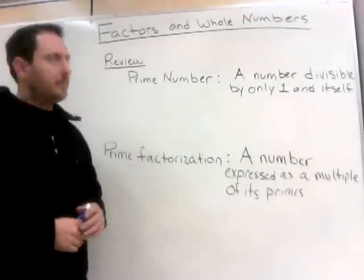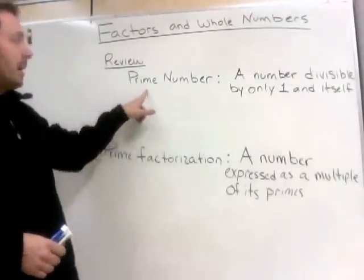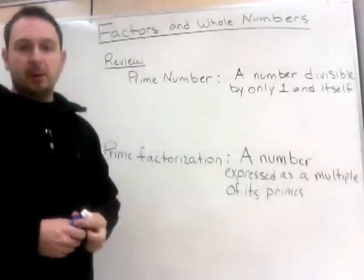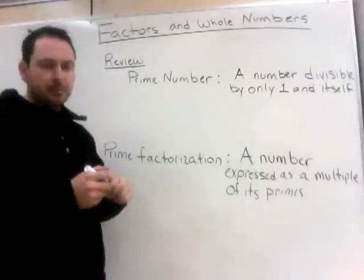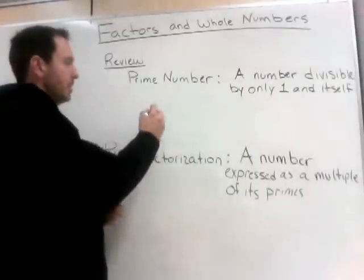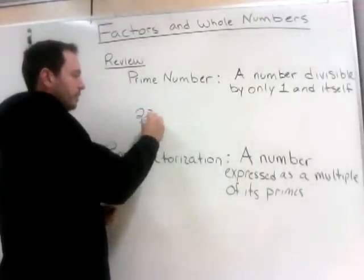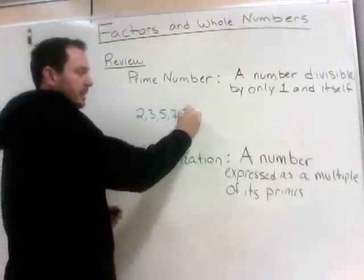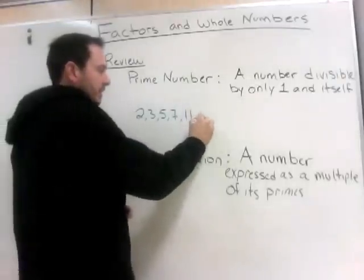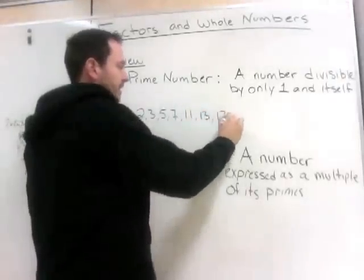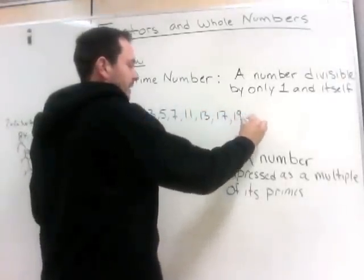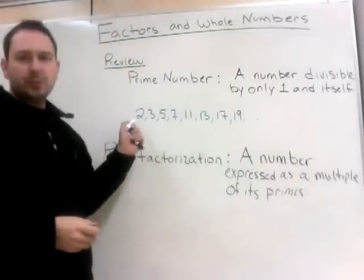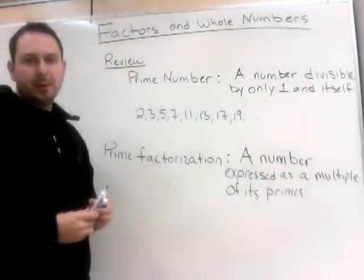Before we start today, we're going to review what a prime number is. A prime number is a number that is divisible by only one and itself. Some examples of prime numbers are 2, 3, 5, 7, 11, 13, 17, 19, and these continue. Notice that 2 is the only even prime number.